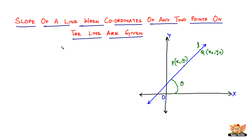When you have these two points and do not have the angle, this is how you find the slope. The slope is represented by m, and m equals y2 minus y1 — the difference of the ordinates, which are the points on the y-axis — divided by x2 minus x1, which is the abscissa. So it is the ratio of the differences between the ordinates and the abscissa.